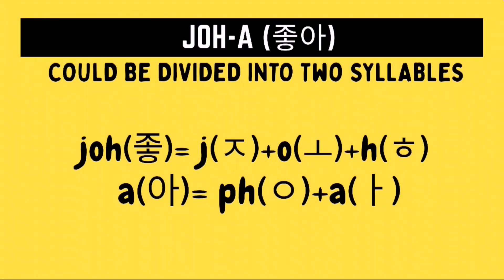Now, how do we spell CHOWA in Hangul? Let's start with the first syllable. To write the first syllable CHOW in Hangul, we need to draw first a Jiyot character, followed by an O character, followed by a Hiyo character. And then for the second syllable A, we need to draw first a no-sound Iyong character, followed by an A character. Then we just combine the Hangul for each syllable to form the Hangul of the word CHOWA.